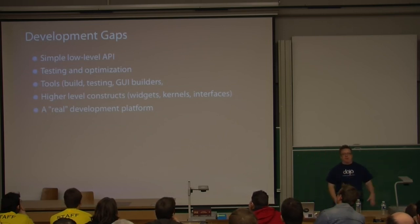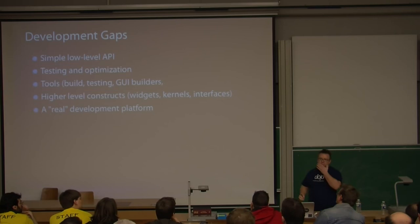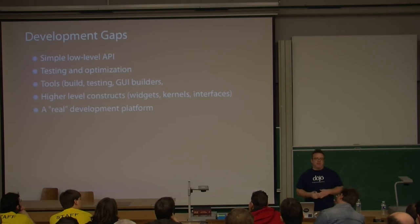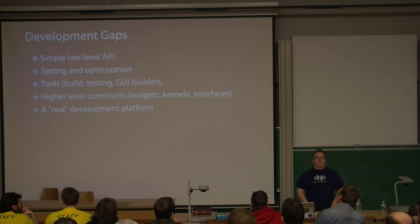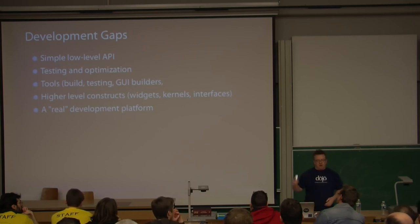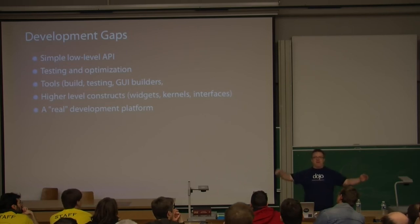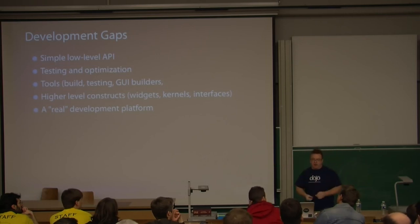Browser gaps, development gaps — tools for browsers are way better than they were five years ago. Imagine building an application without Firebug or Web Inspector — it's like coding in the dark. Or having higher-level constructs: give me a chart, give me a grid. An HTML table, while grid-like, doesn't give you column re-sorting, drag and drop, or editing. There's a spectrum between HTML table and spreadsheet, and we all want some subset of features in the middle that we'd call a grid.